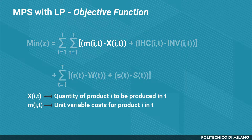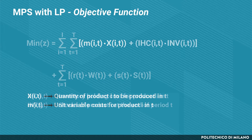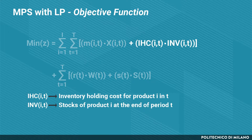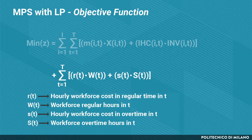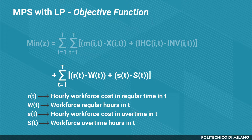More specifically, each of these items is obtained as the product, for every product and every period, of the decision variable — the quantities to be produced — multiplied by the unit material costs or unit variable costs. For inventory holding costs, we have a variable expressing the quantity to be held in the warehouse at the end of the period, multiplied by the unit inventory holding costs. These costs can depend both on items and on periods. Workforce costs are expressed as the product of W and S — the amount of used hours in regular and overtime — each multiplied by the unit cost of regular and overtime workforce hours.